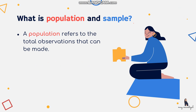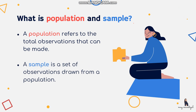A population refers to the total observations that can be made. For example, if you are conducting research to identify the number of sleeping hours of students in a particular school, that will be your population — all of the students in that school. Because there can be a lot of students, that's why we have what we call a sample. A sample is a set of observations drawn from a population; instead of considering all students, we just identify some, like two sections per level.